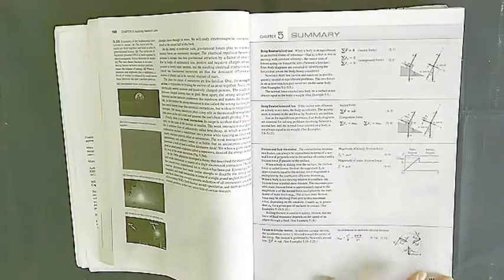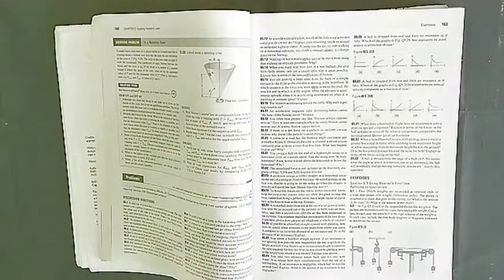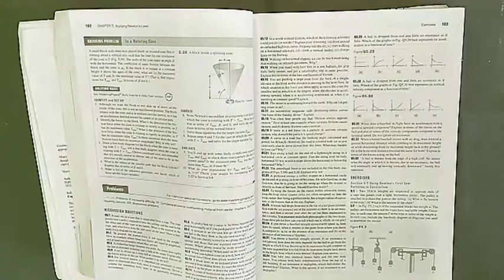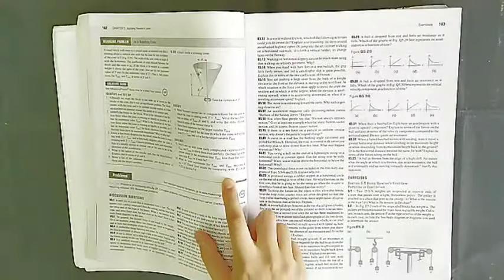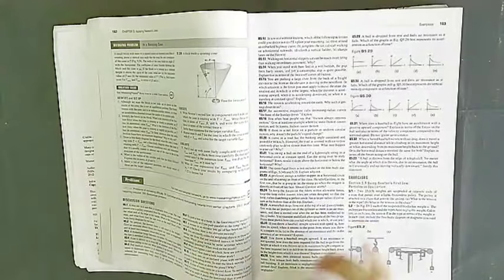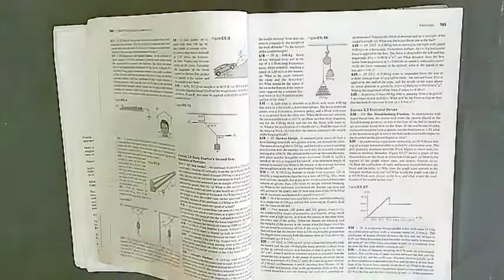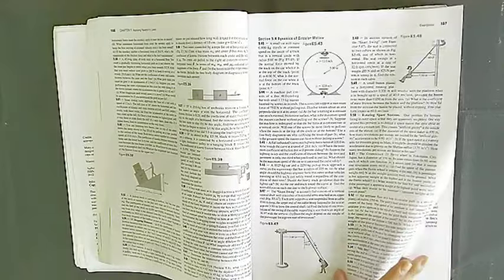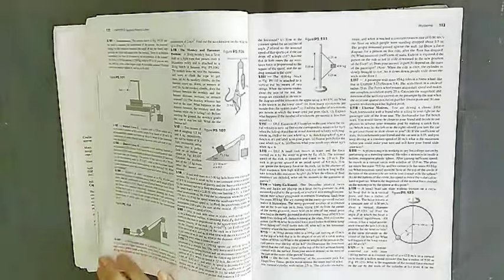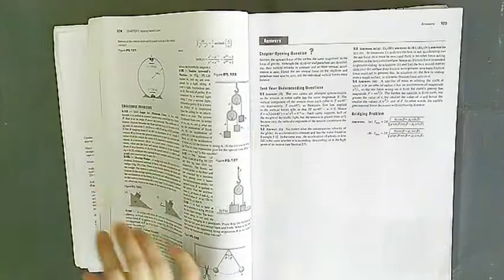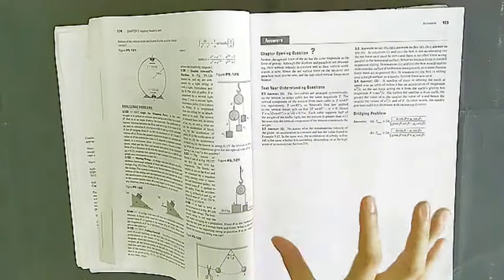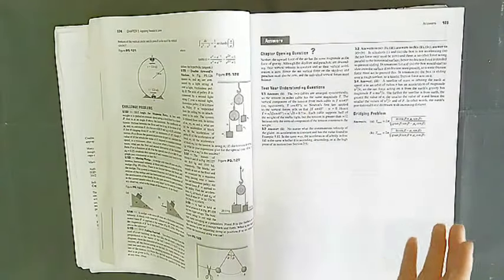This seems like the end of the chapter. This is where we have a visual summary which was written, and a bridging problem. The bridging problem has identify and set up, execute and evaluate again, but it is not completely solved for you. Then it is full of problems. Lots of exercises so one can really test their conceptual understanding which gets developed as you go on solving these problems. And then challenge problems. This is the final test your understanding question which makes use of all the concepts which have been covered in the chapter.